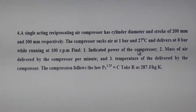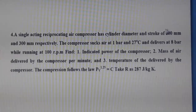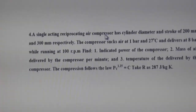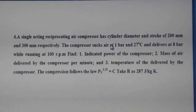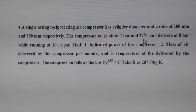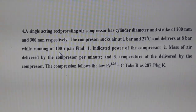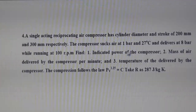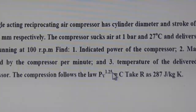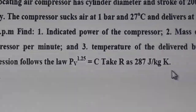This numerical is similar to the previous one. The only difference is two additional parameters: cylinder diameter = 200 mm and stroke = 300 mm. The rest of the parameters are as before: p1 = 1 bar (convert to Pascal), T1 = 27°C (convert to Kelvin), p2 = 8 bar, speed = 100 rpm, polytropic index n = 1.25, and characteristic gas constant R = 287 J/kg·K.